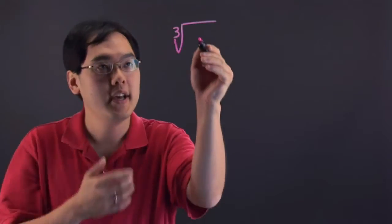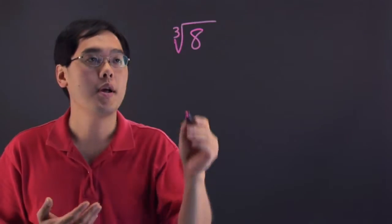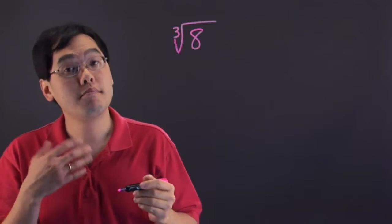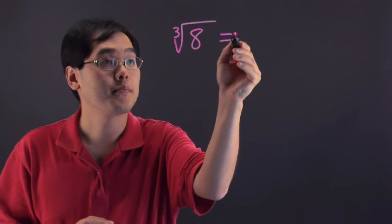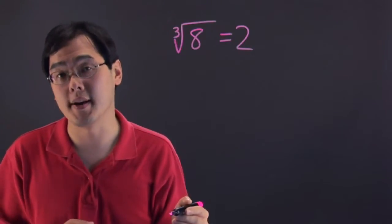So for example, suppose you have cube root of 8, what you've got to think about is what number multiplied by itself 3 times is going to give you 8. The only number that really comes to mind is the number 2 because 2 to the 3rd is going to give you 8. So that's another way to think about it.